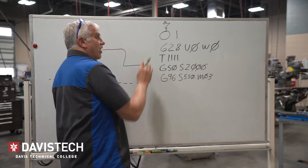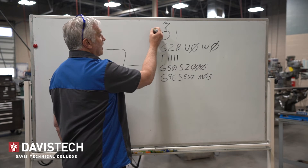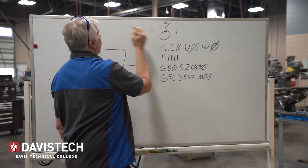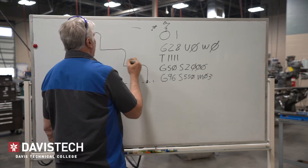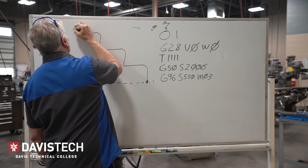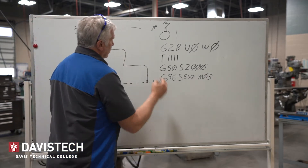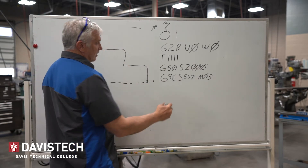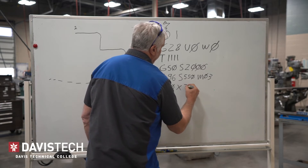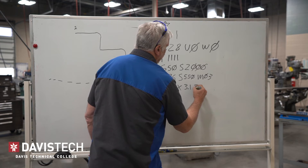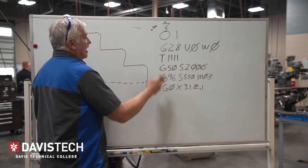Now that we've turned on the spindle and called up the tools so it knows its offset, we can go to our part where this is zero, zero. We want to actually start right up here — this is our start point. This material is just a little bit bigger than three inches, so we're going to rapid with a G0 to X of 3.1 and Z of 0.1. So the turret is going to rapid to that location, being 3.1 and a hundred thousandths in front of Z.